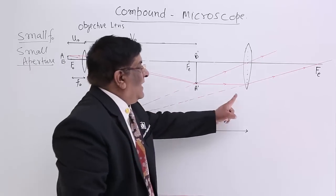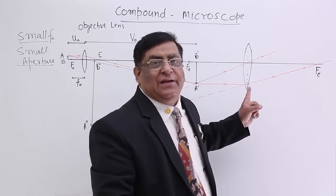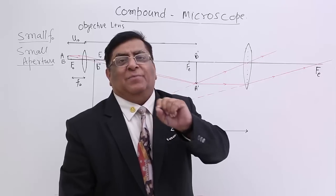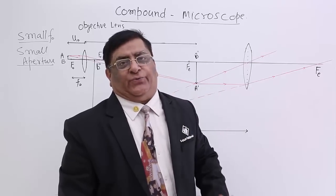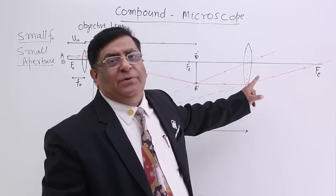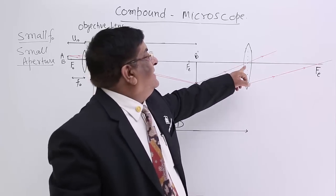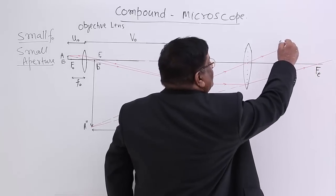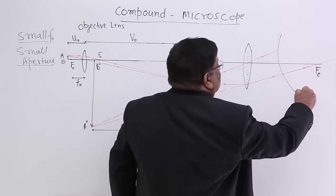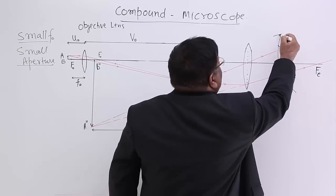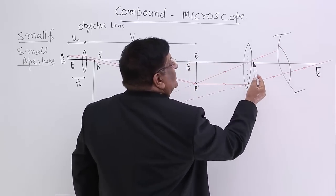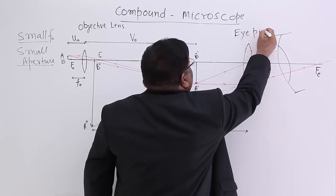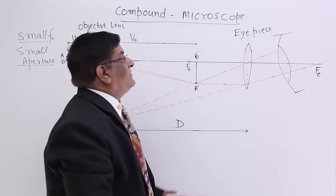Then we have another lens here. This is again a spherical convex lens and it acts similar to a simple microscope — it has the same job as a simple microscope. We keep this lens near the eye and observe the object from this side. So because it is close to the eye, we call it the eyepiece or eye lens.